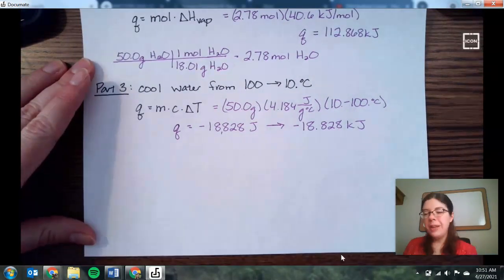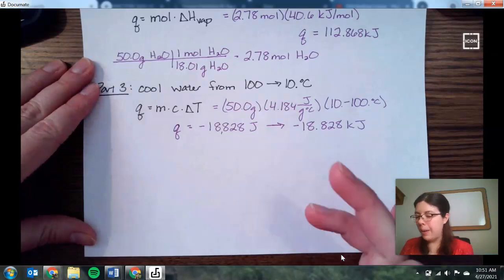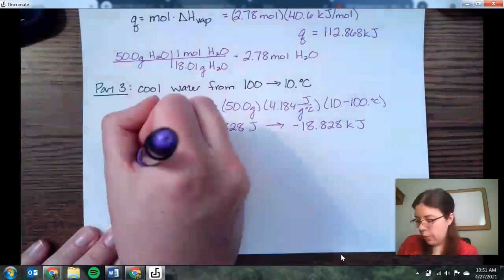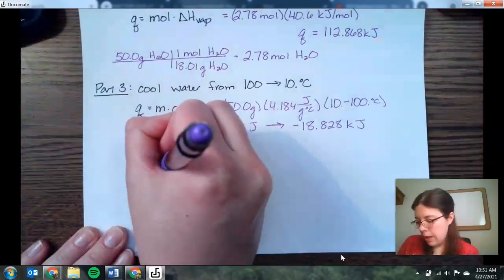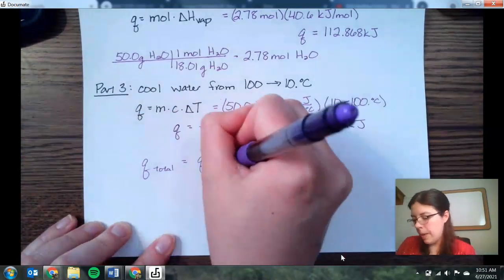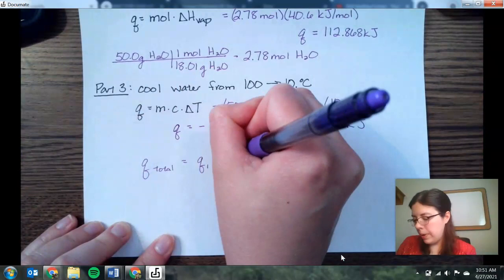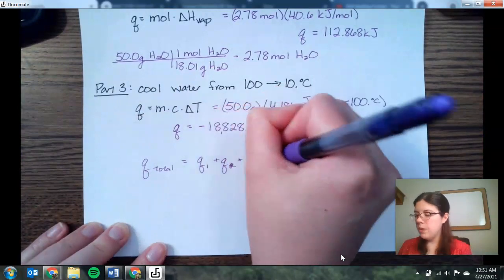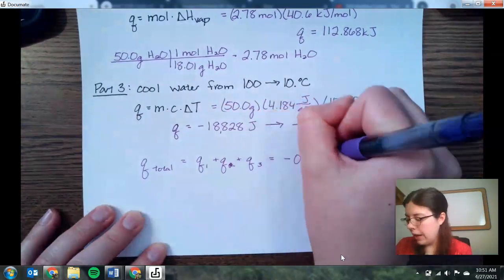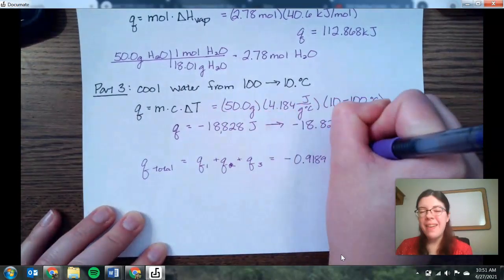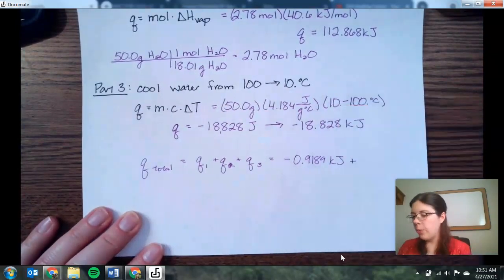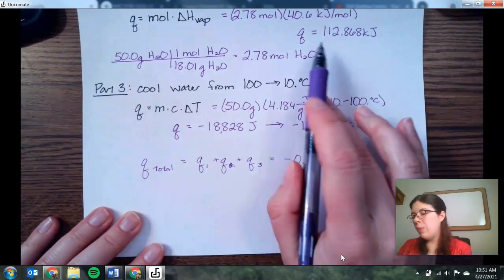So the final thing that we need to do now is go ahead and add up those three values. So Q total is equal to the first one plus the second one plus the third value. So part one, we have negative 0.9189 kilojoules. Again, remember you need to have the same unit for each of your pieces and parts. For part two, we have 112.868.